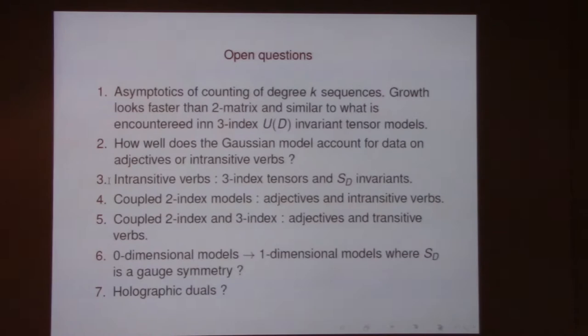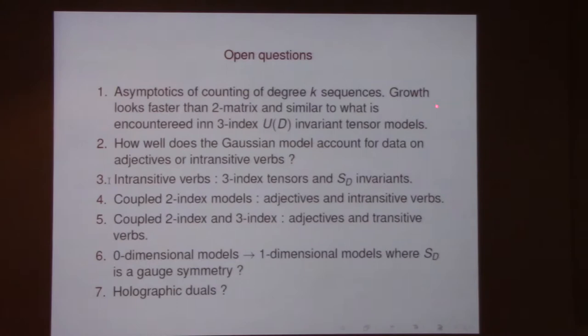The program is to try and compare this with the data and see if it works better than the five parameters. Some open questions: we gave formulas for the counting at degree k, but it would be nice to know the asymptotics of those sequences — how fast do they grow? They grow faster than partitions, and it would be nice to characterize that growth.